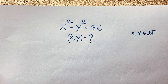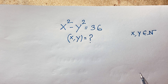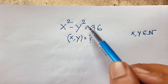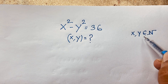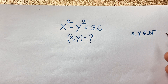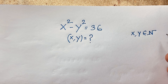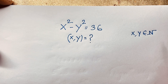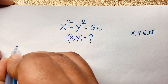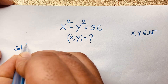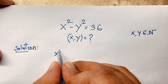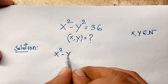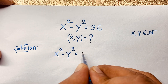Hello everyone, welcome to Ross S Plus 2. In this video we have solved a nice math problem: x squared minus y squared is equal to 36. We will find out x and y, where x and y are natural numbers. This is a nice math olympiad question, so let's start the solution.